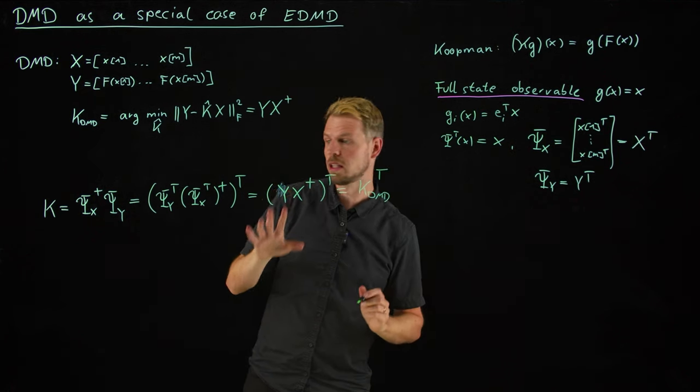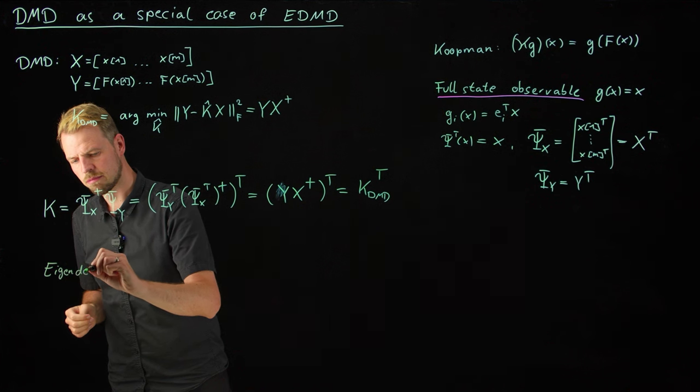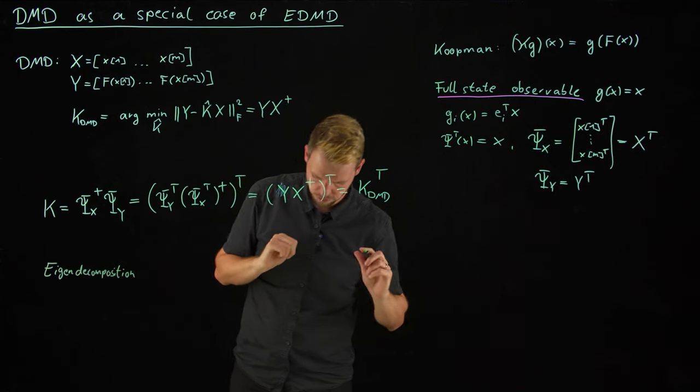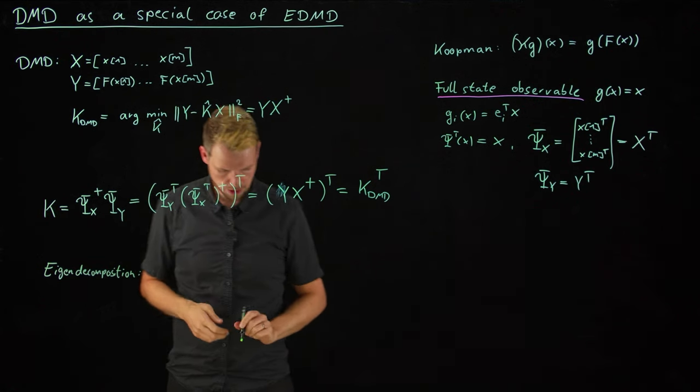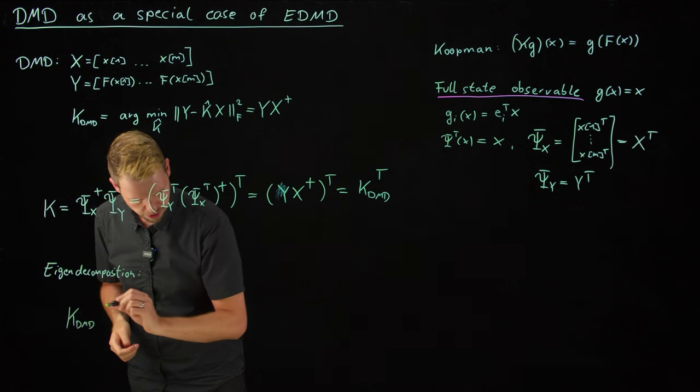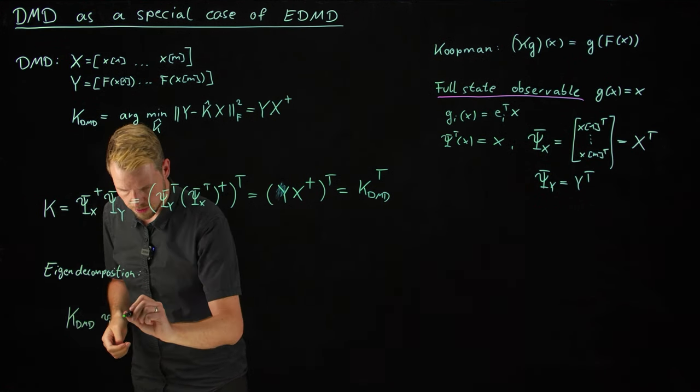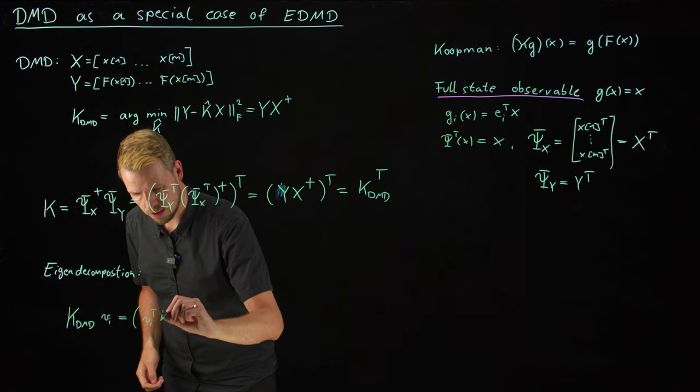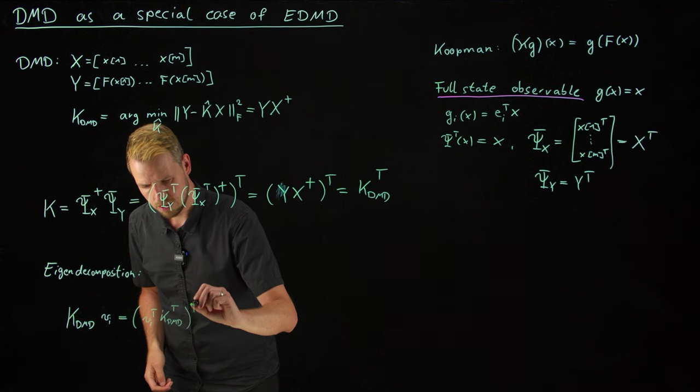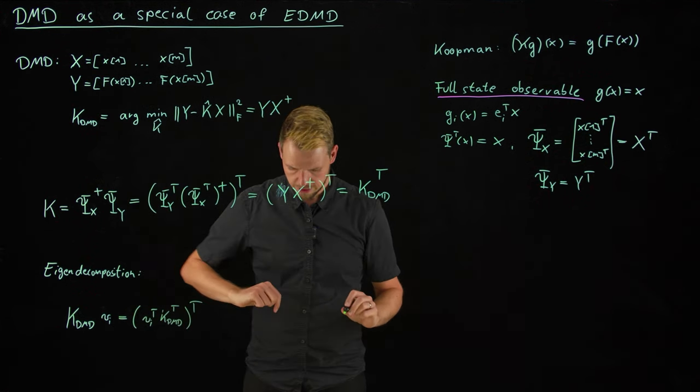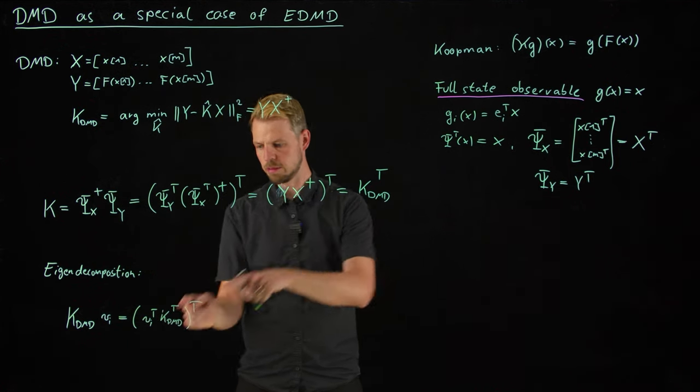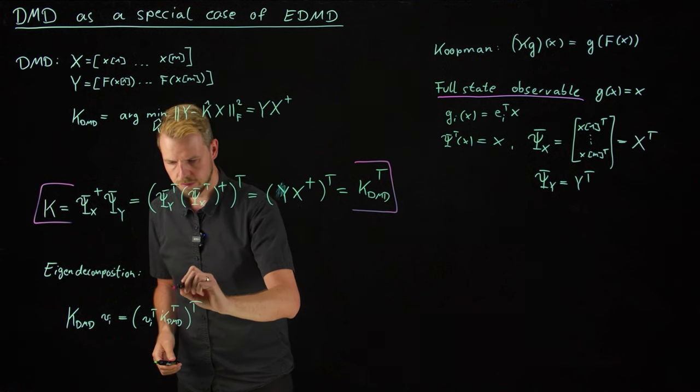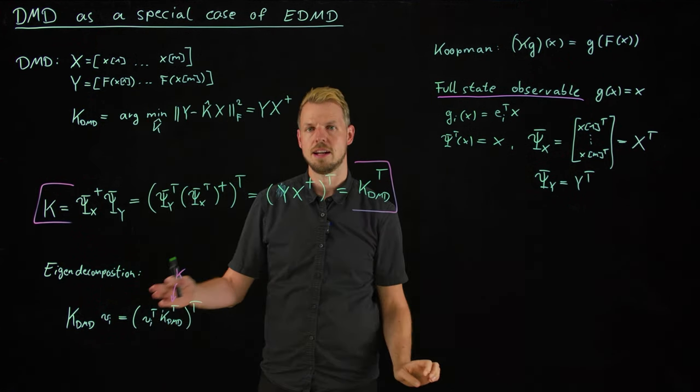Okay. So DMD gives me the same matrix under a very special dictionary, just transposed. And what we can now do is we can also study the eigen decomposition to see what the eigenvectors of the DMD matrix are in our Koopman language. So let's just study K_DMD times an eigenvector V_i. And I'm just transposing some stuff. So what I'm getting is V_i transposed K_DMD transposed. So I'm swapping the order, transposing. And what you see now is, if I'm taking the transposed matrix, my K_DMD matrix becomes the K matrix.